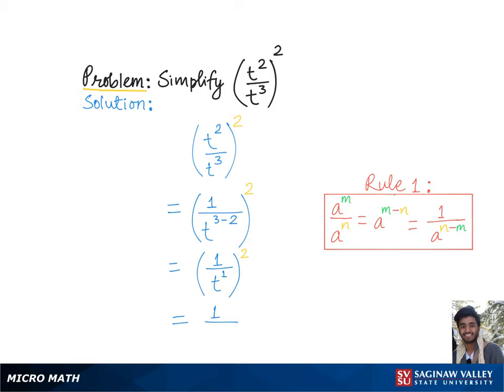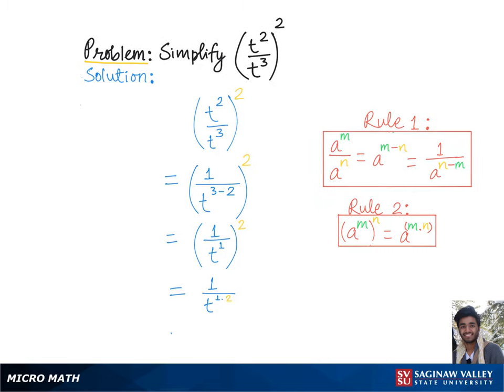Now according to Rule 2, we will multiply the exponents — that is, t raised to the 1 times 2 — which is equal to 1 over t squared, which is the final answer.